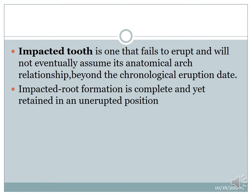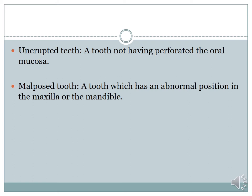What is the difference between an impacted tooth and an unerupted tooth? An impacted tooth is one that fails to erupt and will not eventually assume its anatomical relationship beyond the chronological age of eruption. Impacted tooth formation is complete and yet retained in an unerupted position. Whereas an unerupted tooth is a tooth that has not perforated the oral mucosa and its chronological age has not come. A malposed tooth is a tooth in an abnormal position in the maxilla or mandible.